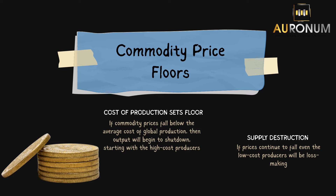You'll see this first in the high cost producers, because depending on where the gold mine is in the world and the type of gold mine, every company will have slightly different production costs. So it will be the high cost producers that go out of business first, and that will start to lead to some supply being taken out of the market.